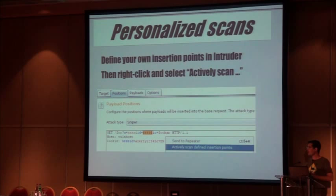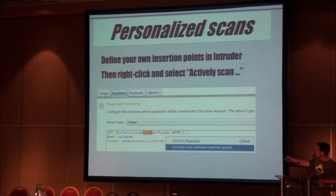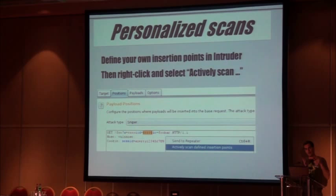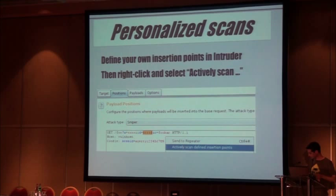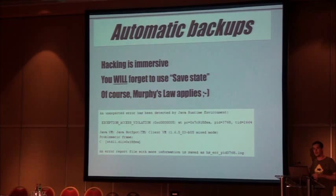Personalized scan — very few people know about this one. If you send a request to the scanner, it will automatically define injection points. But sometimes you don't want or need the automatic intelligence of the tool — you need to define yourself what to test, but still want to use the scanner's black-box functionality. So you send your request to intruder, define your payload as usual, then right-click and choose 'actively scan defined insertion point.' This uses the scanner logic applied only to this specific location. You get perfect control over the location plus the automatic power of the scanner.